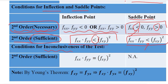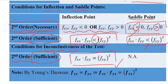There is one more possibility: the test is inconclusive. This happens when the second order sufficient condition shows that both terms are equal — meaning we have none of the situations described. We also know that f_xy equals f_yx due to Young's theorem, so their product can be written as f_xy whole squared since both are equal.